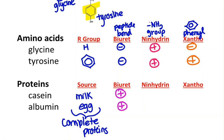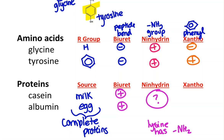Ninhydrin tests for the NH2 group. In a protein, those groups on the amino acids are lost when they make the peptide bond. So theoretically, a protein should test negative. However, if the protein has very many units of lysine — an amino acid that has a free NH2 group — then it can test positive. It also may depend on whether the protein is opened up so that those groups are exposed or not. So we'll say we get mixed results here, and that's how we should interpret that.